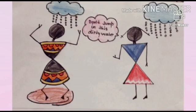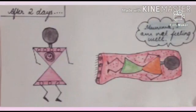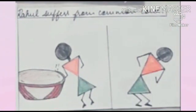It rained heavily during the day. Rahul's friends rushed to take a shower, but he was busy playing in the water. When Rahul reaches home, he rushes towards his room without changing his clothes and washing his hands. After two days, he was not feeling well and did not go to school. Due to poor hygienic conditions, Rahul suffers from food poisoning and common cold.